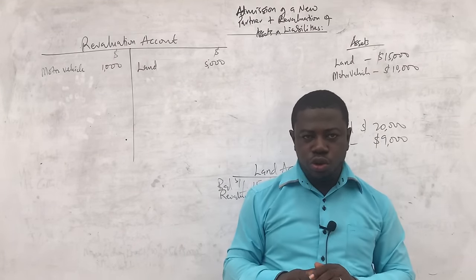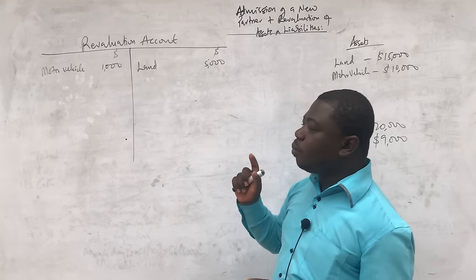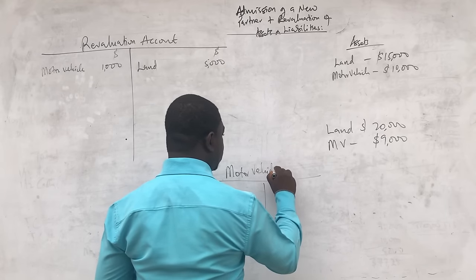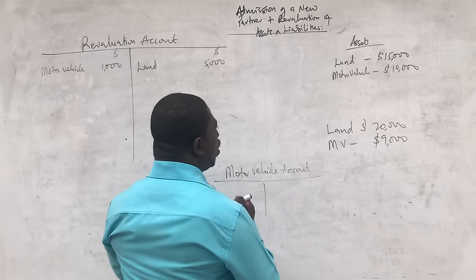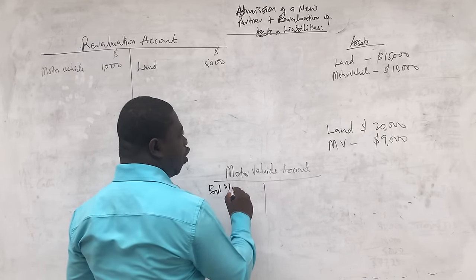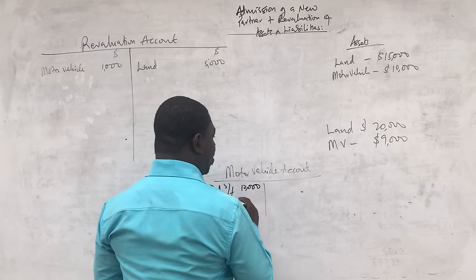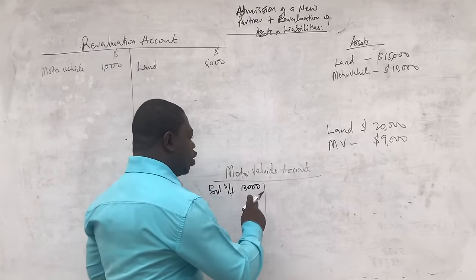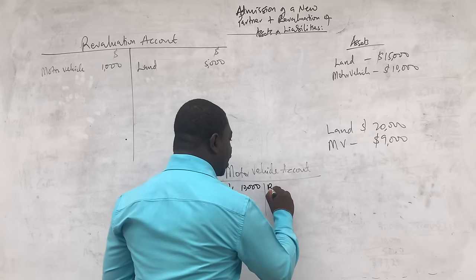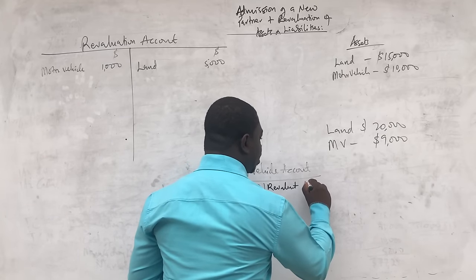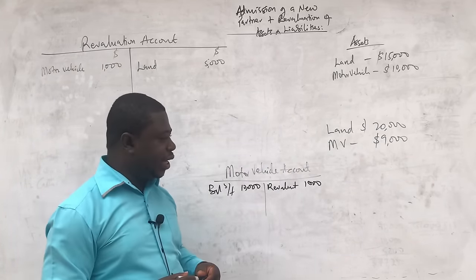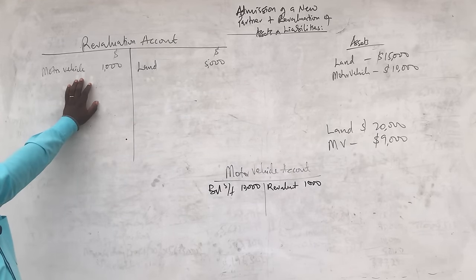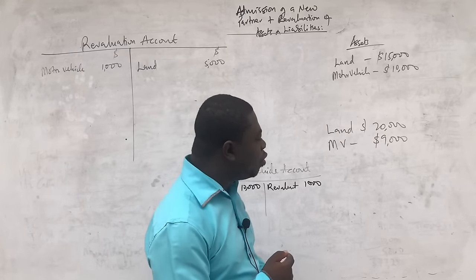The opposite is true with liabilities. If payables of $3,000 are reduced to $2,500, payables is a liability and if it is reducing, it is a gain. We debit the payables account by the difference of $500 in the name of revaluation, so the balance carried down is $2,500. The corresponding entry comes to the credit side of the revaluation account as payables at $500.